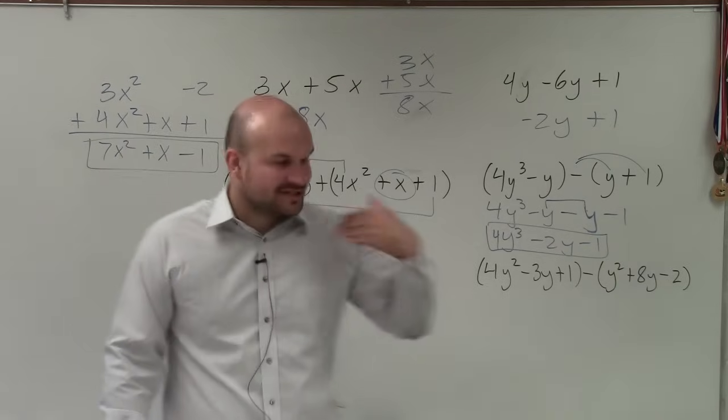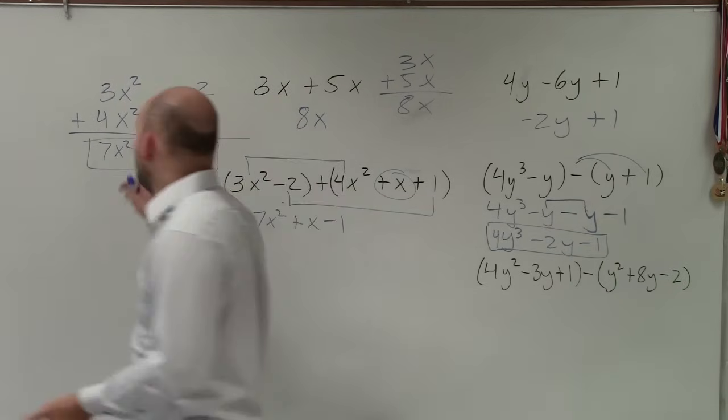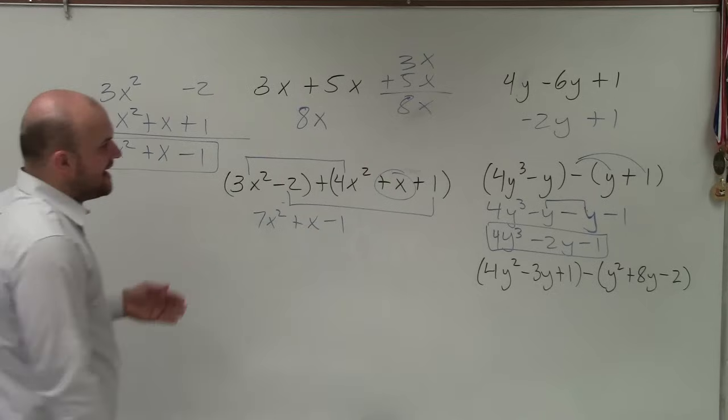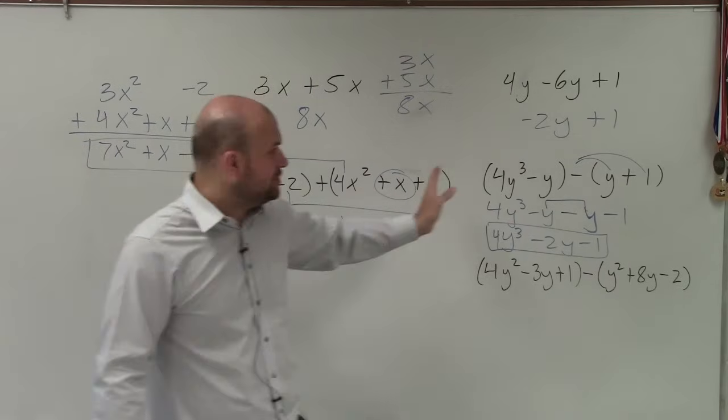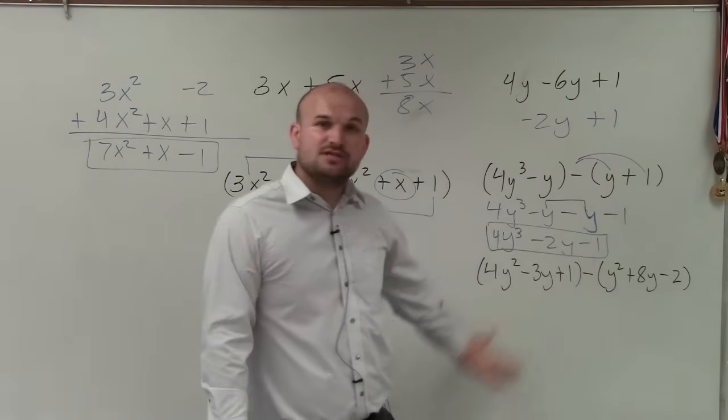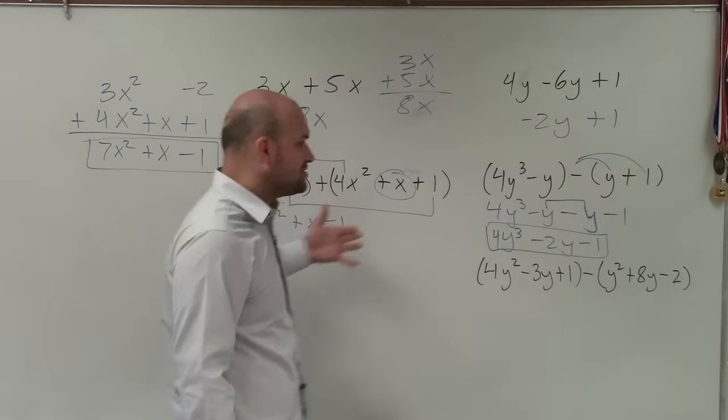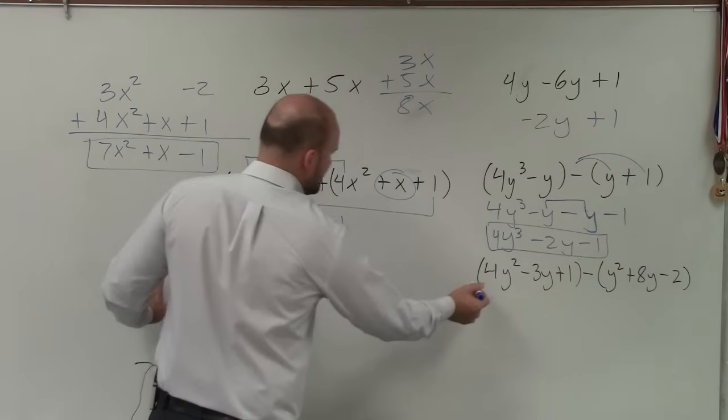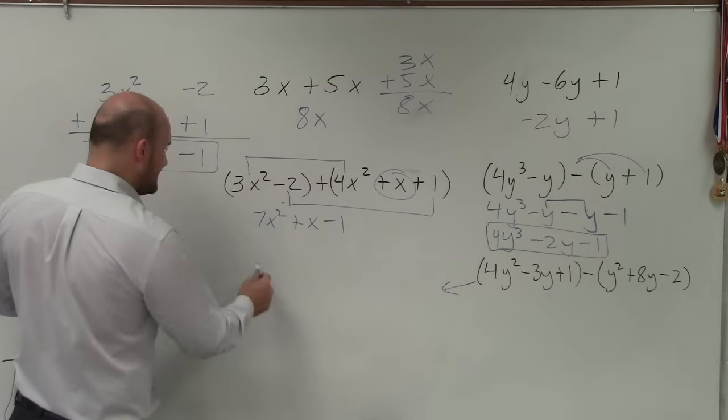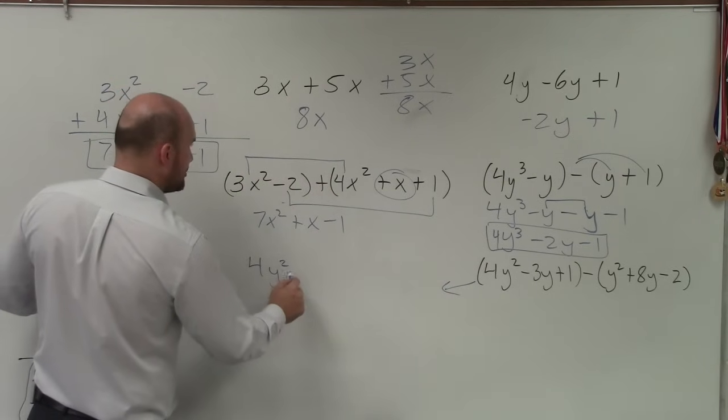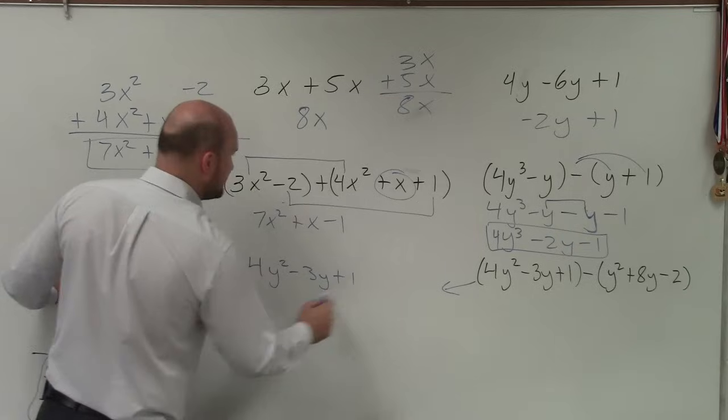Now, the next way, if you don't really like doing distributive property, the next way is to go back to our vertical method. And you can use the vertical method. You can distribute and then use the vertical method, or you can also just say, you know what, I'm not going to, I'll do this over here. I'm not going to distribute at all.